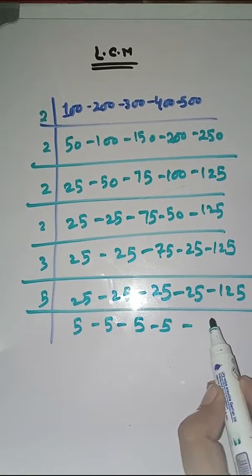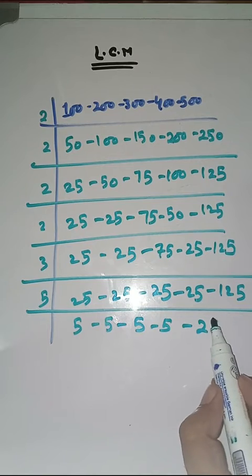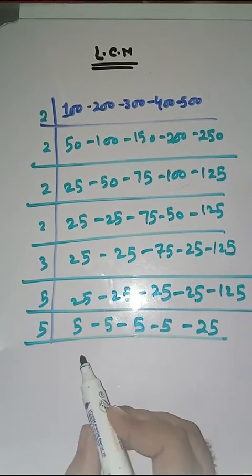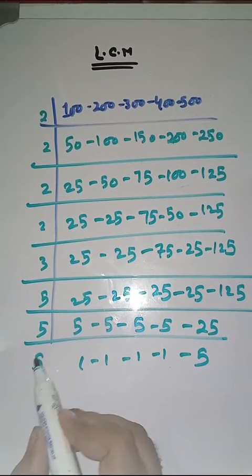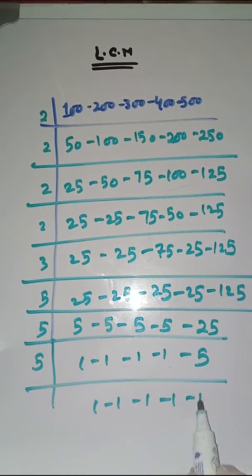5 times 5s are 25. Again with 5. 5 times 1s are 5, 5 times 1s are 5, 5 times 1s are 5. Again with 5. 5 times 1s are 5.